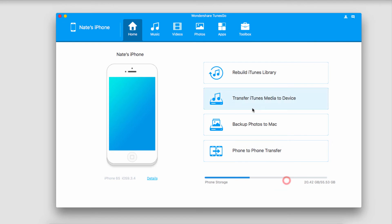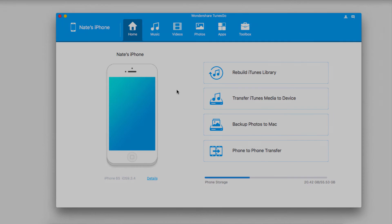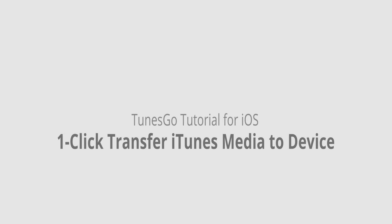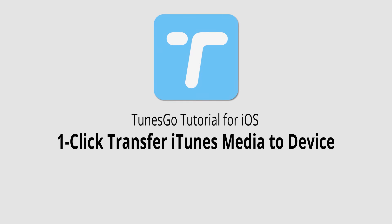Once the process is complete, we can just click on the Complete button. All of the songs and playlists that we have selected have now been properly synced onto our iOS device. And that's it — that's how you transfer iTunes media to your iOS device in one click using Wondershare TunesGo. Thank you.